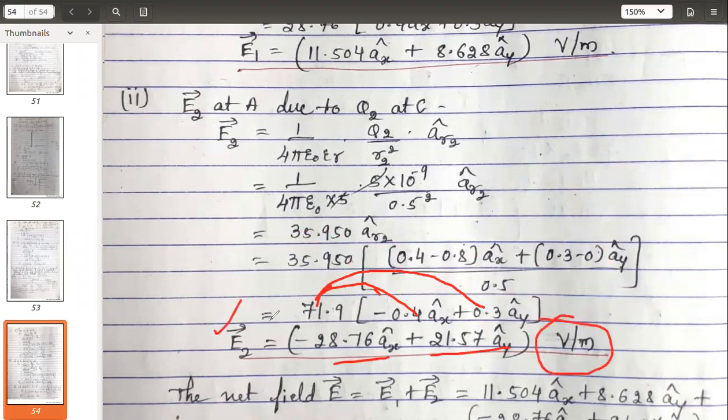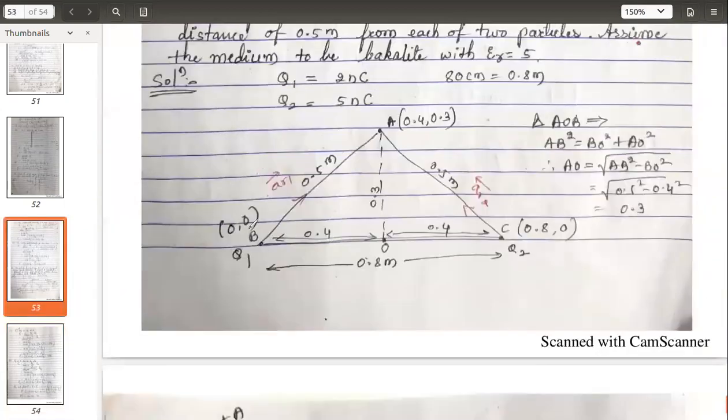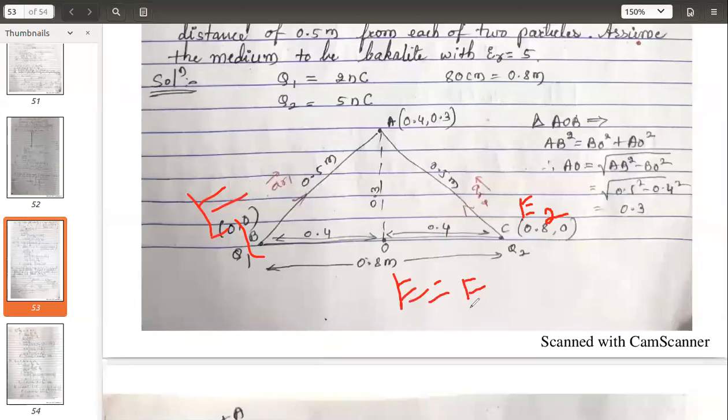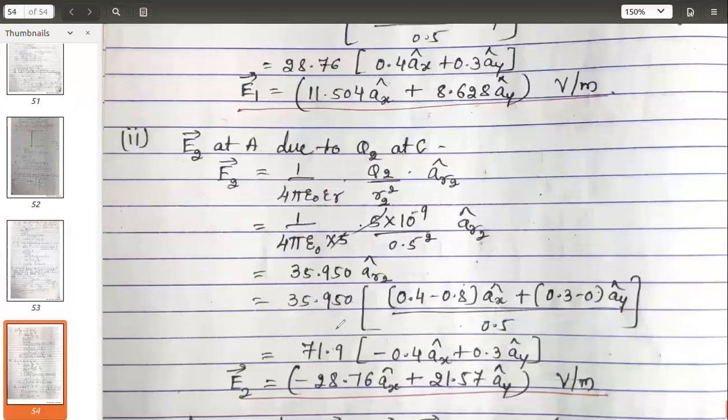We will get E2. Now what is the last thing? E1 and E2 separately we have found. This is E1, this is E2. The net field E will be the sum of these individual fields: E1 plus E2. So just add the coefficients of x and y. There is no z here.